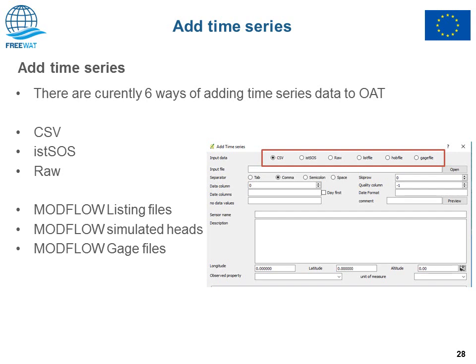The Add Time Series interface lets you select your preferred way to create a new series — creating a new sensor and adding its data. You can select CSV, SOS, or raw input data if you want to enter data manually. Depending on the input option selected, the interface dynamically changes to ask for the file location, connection parameters for the web server, or a space to enter data manually.